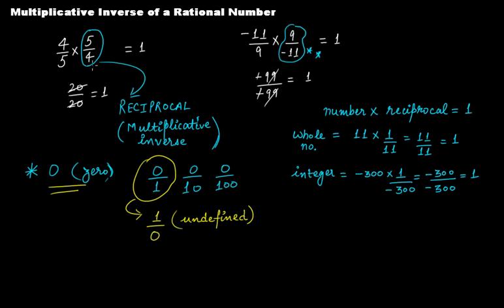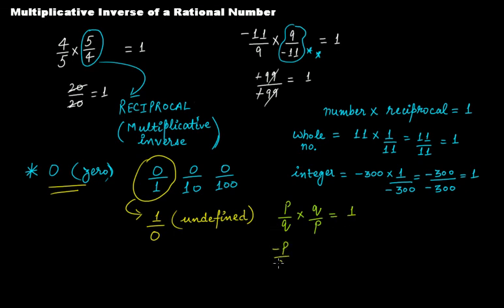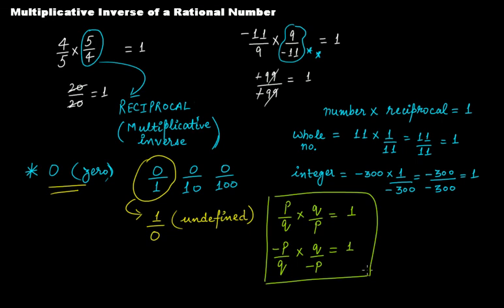In general, if your rational number is of the form p over q, then its reciprocal or multiplicative inverse will be q over p, and if you multiply p over q with q over p you get 1. If your rational number is of the form minus p over q, its reciprocal or multiplicative inverse will be q over minus p, and if you solve it you'll get 1. So this was about the multiplicative inverse of a rational number.